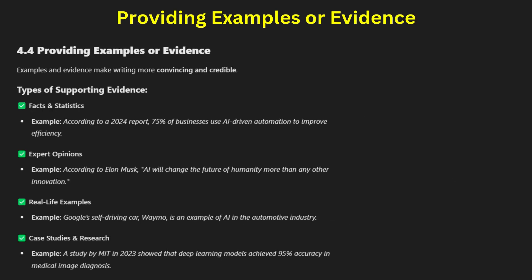Providing examples or evidence: examples and evidence support arguments, making writing more convincing. There are different types of evidence — statistical data with numbers and figures, expert opinions with quotations from specialists, and real-life examples and case studies. For instance, if discussing the importance of cyber security, a strong example would be: 'In 2021, a major cyber attack on Colonial Pipeline disrupted the fuel supply across the US.'